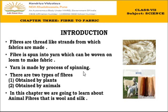To summarize: fibers are threads used to make fabrics. First, yarn is made from fiber — yarn is also a thread in which two or three fibers are rolled together. Yarn is made by the process of spinning on machines, and then fabric is made from that yarn.